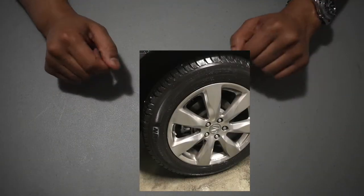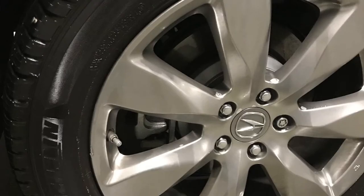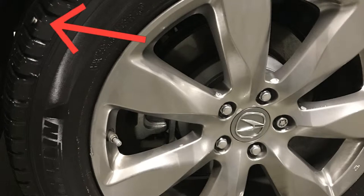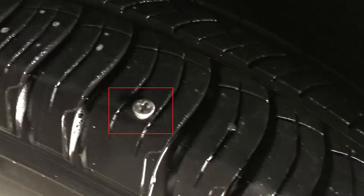This is the right rear tire of a 2014 Acura MDX, and as is obvious, in its tread is a screw that is slowly releasing air.